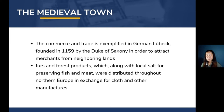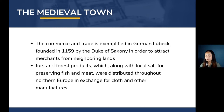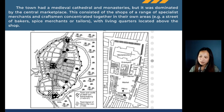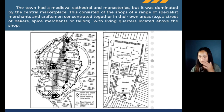I am Abigail Marinel J. Gabutan, continuing the report on urban geography and urban systems. The commerce of the medieval town and trade is exemplified in German Lubeck, founded in 1159 by the Duke of Saxony to attract merchants from neighboring lands. Products like furs, forest products, and local salt used for preserving fish and meat were distributed throughout northern Europe in exchange for cloth and other manufactures. The town had a medieval cathedral and monasteries, but was dominated by the central marketplace. Many cities such as Venice and Nuremberg annexed large areas of their surrounding lands to guarantee food supply, a rural-urban symbiosis that remains common in modern China.